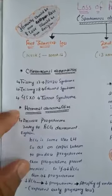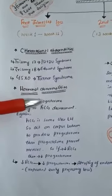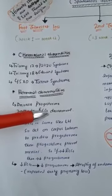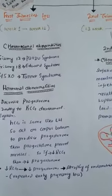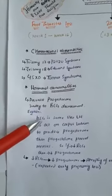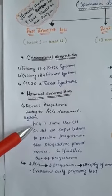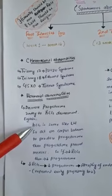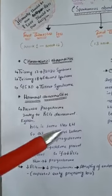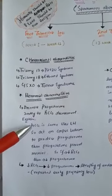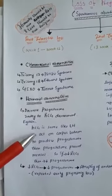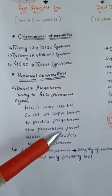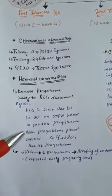For hormonal abnormalities, a decrease in progesterone secondary to decreased HCG — human chorionic gonadotropin — is the key mechanism. HCG is similar to TSH, LH, and FSH because they all share the same alpha subunit and differ only in their beta subunit. HCG acts like luteinizing hormone, so it acts on the corpus luteum to produce progesterone.